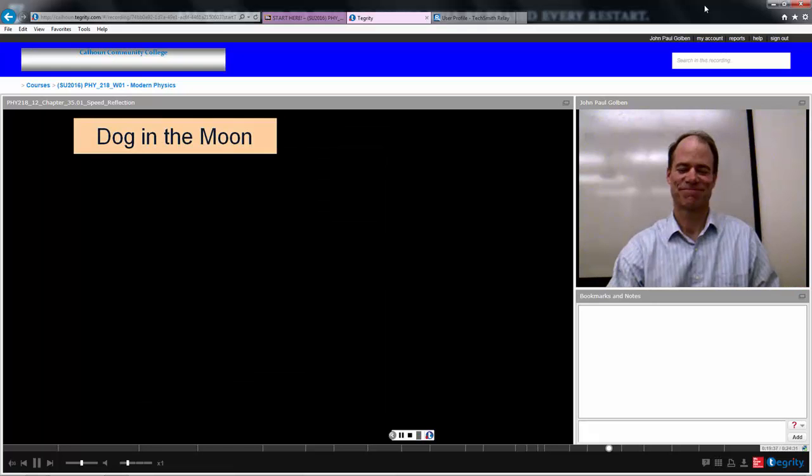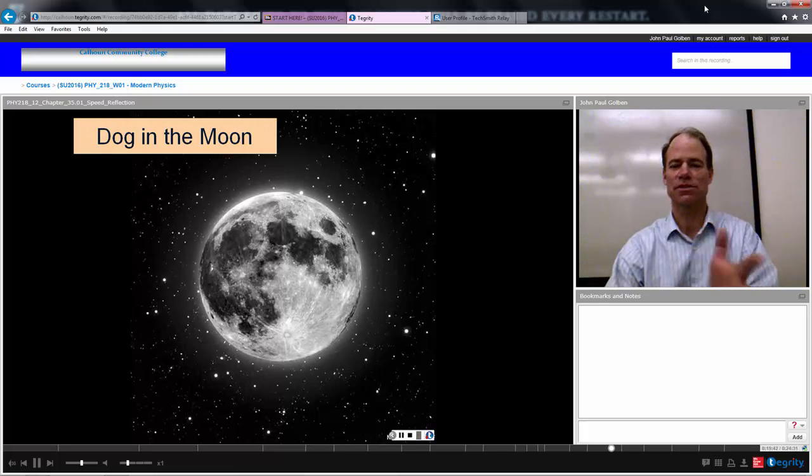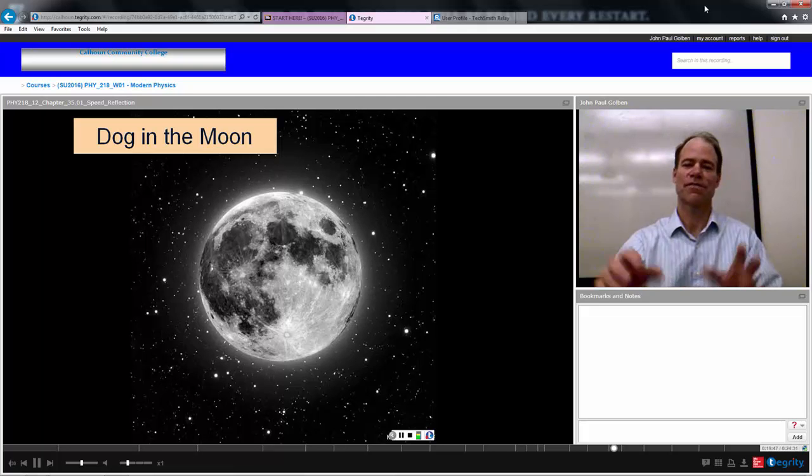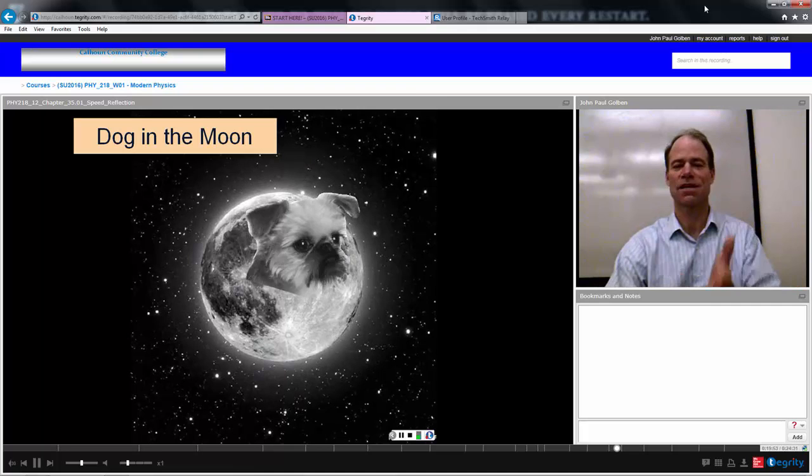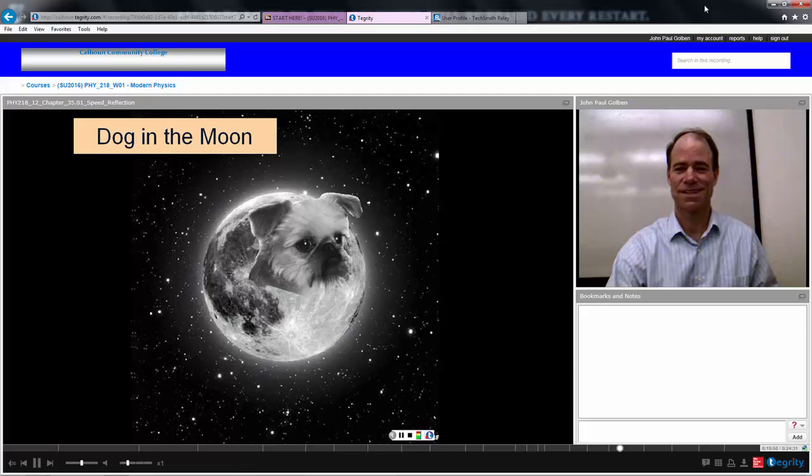You know, you could just as easily say there's a dog in the moon. You know, you're looking at this picture of the moon, and it looks to me, you know, if you look over here, it looks like there's a face and two ears and then the body off, you know, you see, it looks like a face of a dog right there. It looks like a dog.